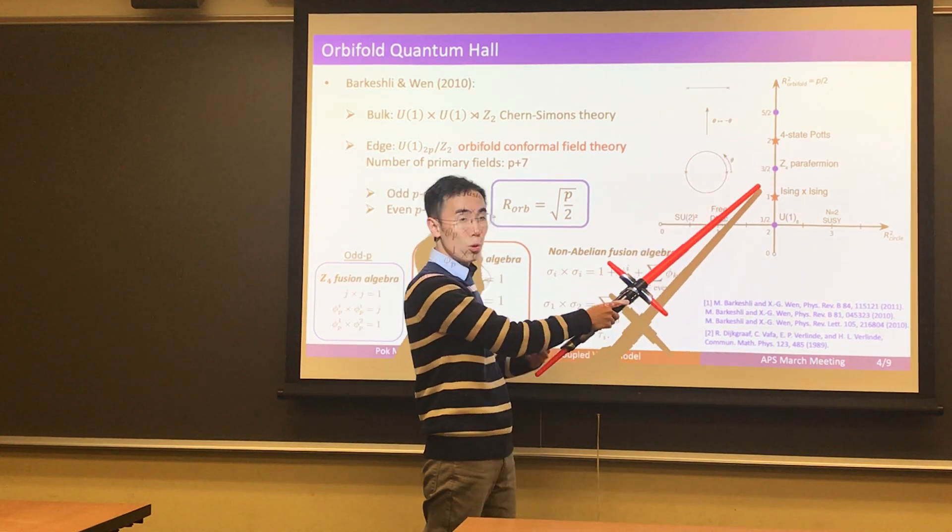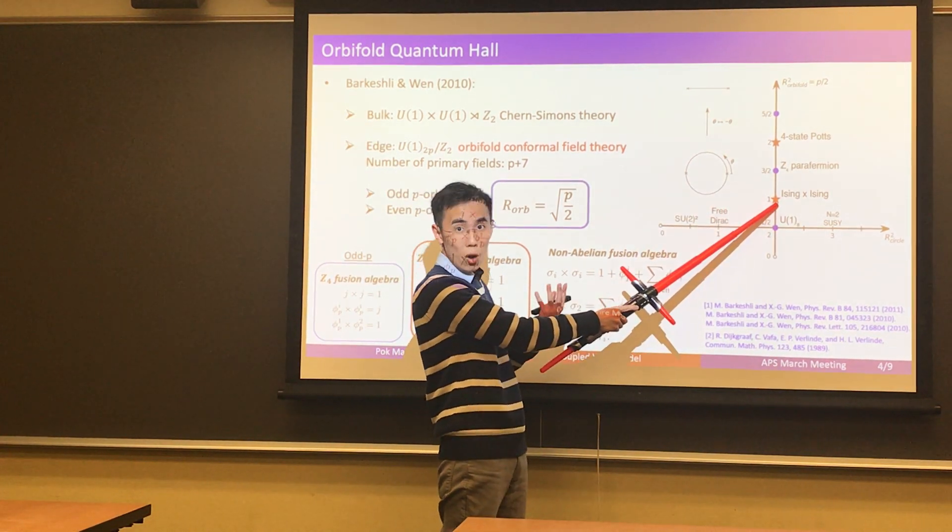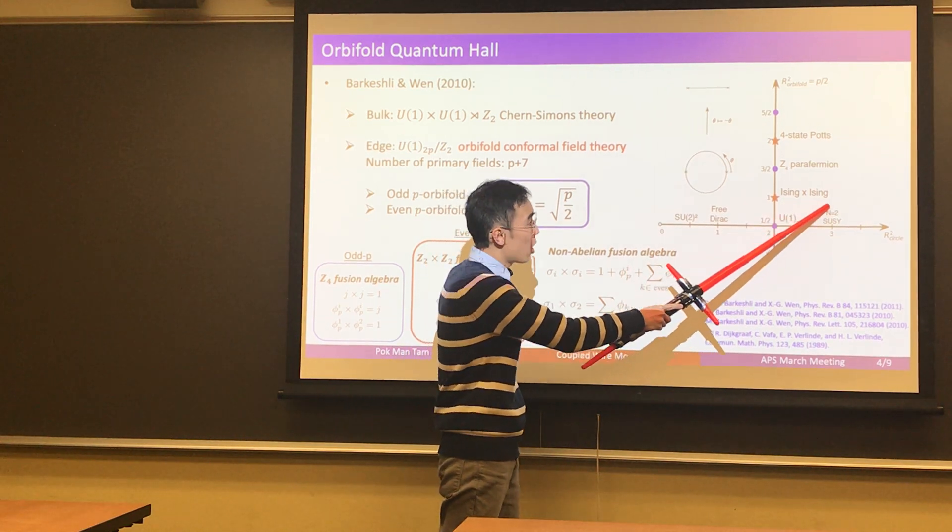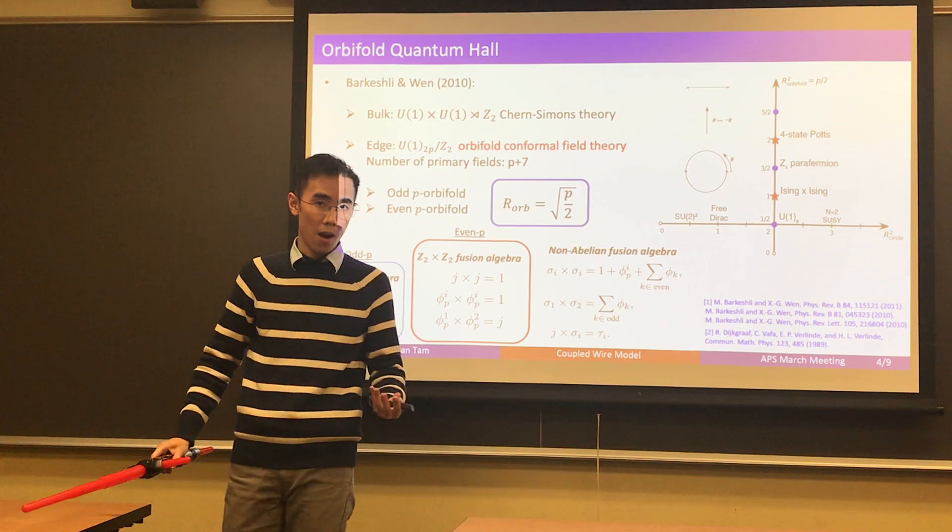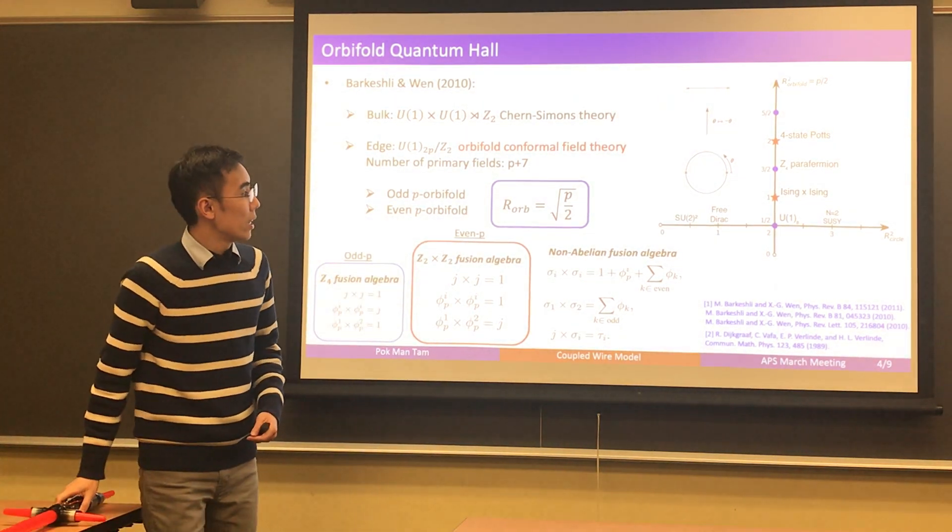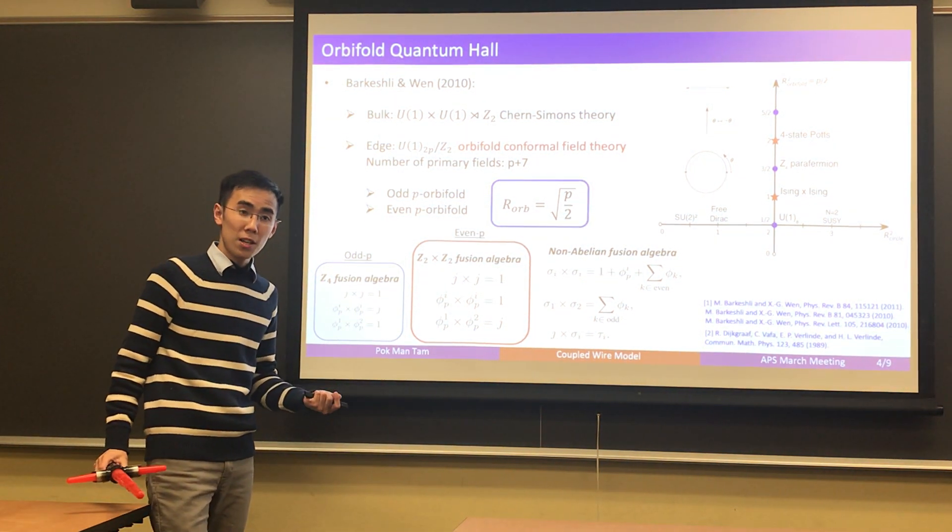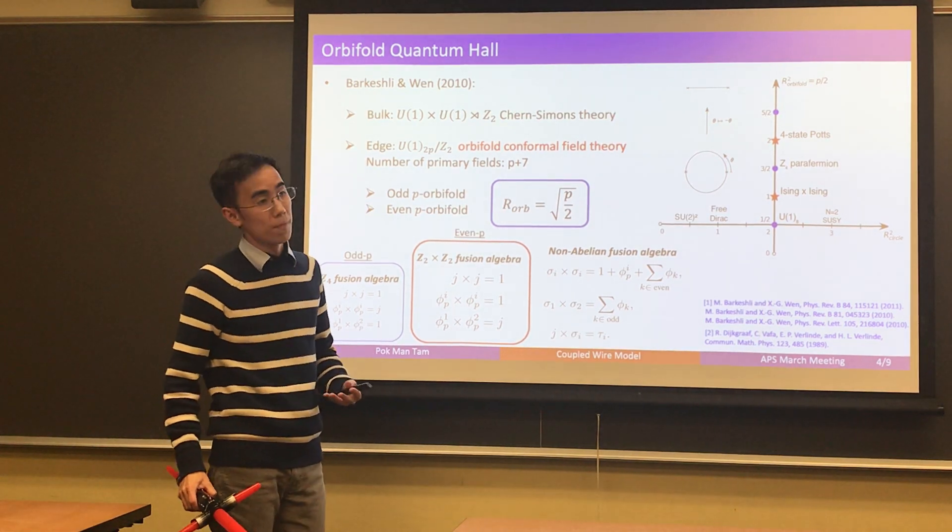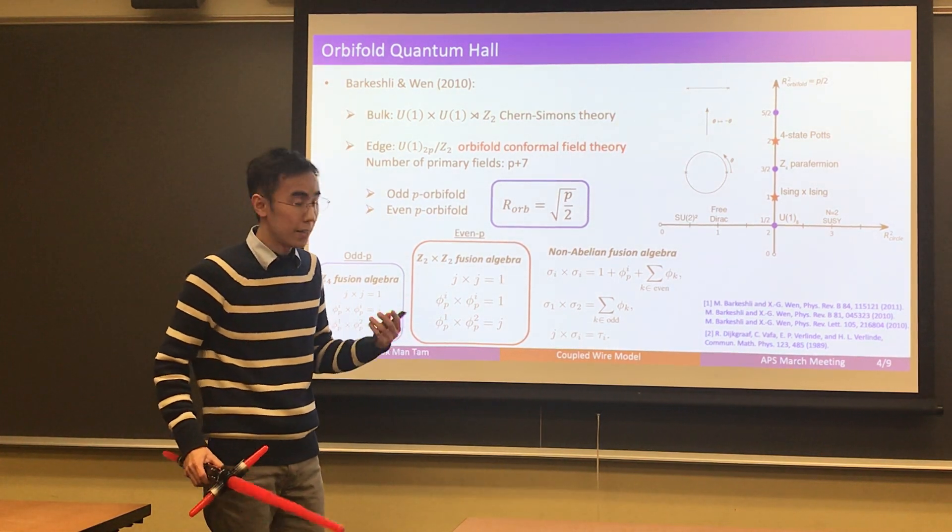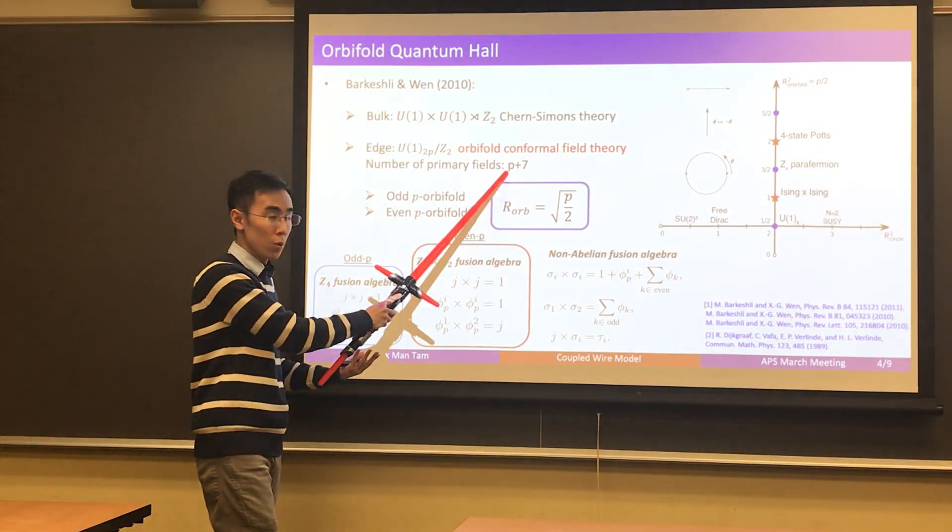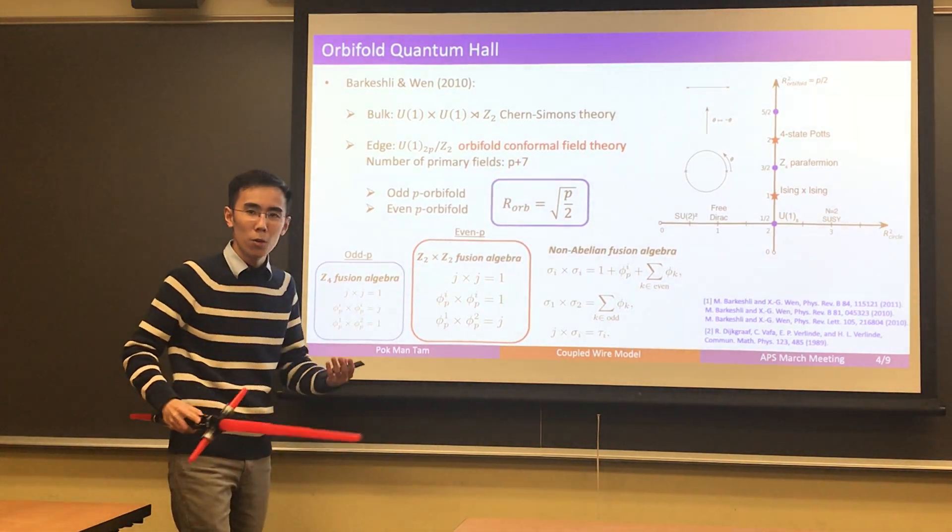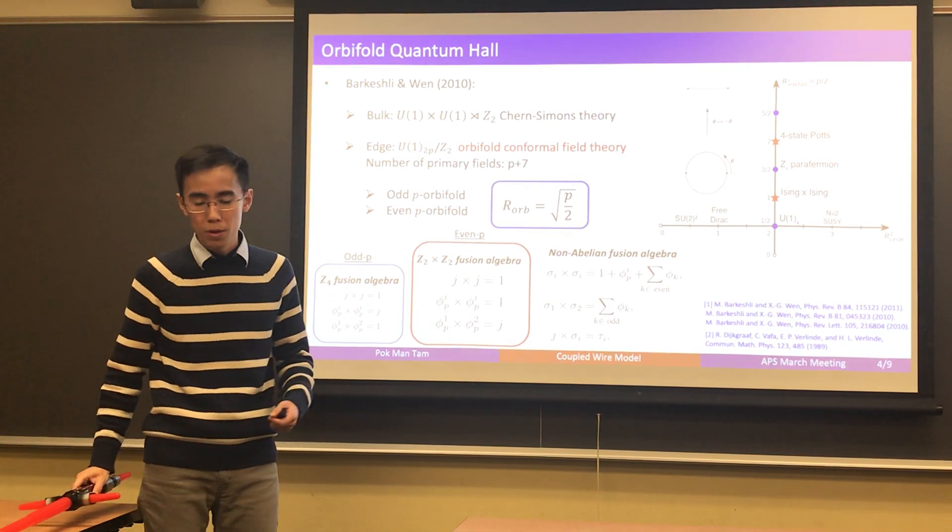This figure on the right nicely summarizes some simple examples of orbifold CFT at different radius. In particular, when p equals to 2, that is when the radius of the orbifold is 1, it is known that the orbifold CFT corresponds to two decoupled copies of Ising CFT. If you happen to know Ising CFT, you would know that there are three primary fields in Ising CFT, 3 times 3 is 9, and in the diagram it tells you that when p is 2, you have 9 primary fields, so things check. So that's the first important point.